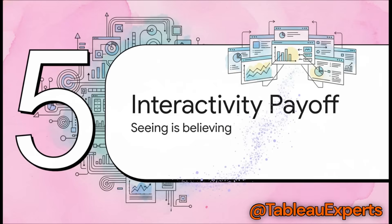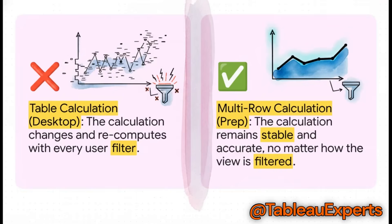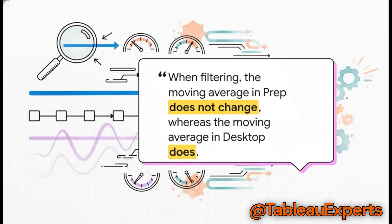So we've built it, but what does this actually look like in the final dashboard? This is where the magic really happens. Let's put them side by side: the old way in desktop versus the new way with prep. Look at that solid line — that's our moving average from Tableau Prep. Watch what happens when a user starts filtering the date range: it stays perfectly stable, showing the real trend. Now look at that transparent line, the one calculated the old way in desktop. See how it jumps all over the place? It recomputes with every single filter, giving a really misleading and volatile picture. The difference in reliability is night and day.